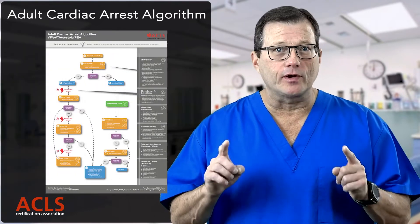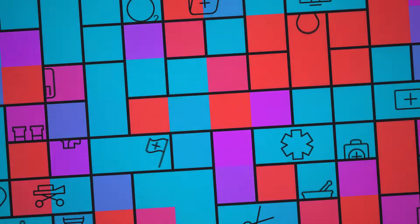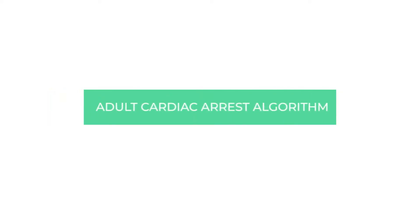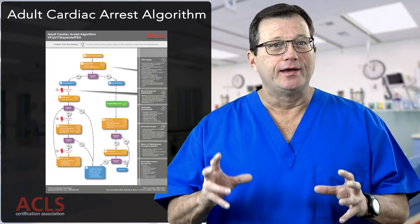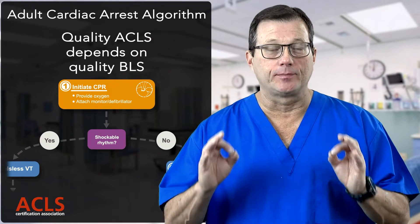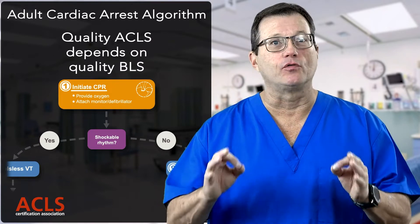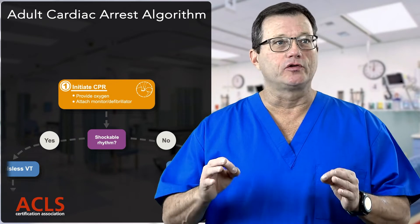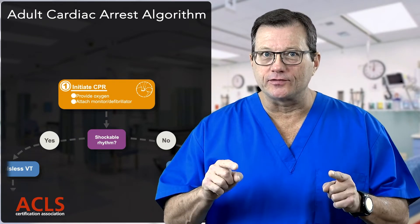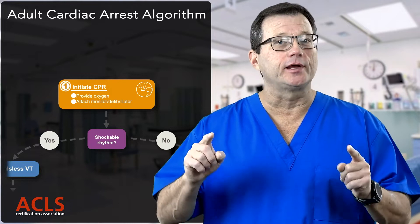Hi everyone. In this video we're going to review the adult cardiac arrest algorithm. The algorithm starts with chest compressions. Quality ACLS depends on quality BLS — performing quality chest compressions. You're going to provide an airway, assist ventilations, and get the pads on them as quickly as we can so we can assess the rhythm.